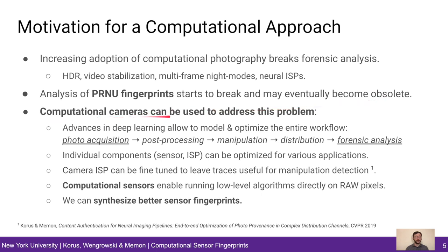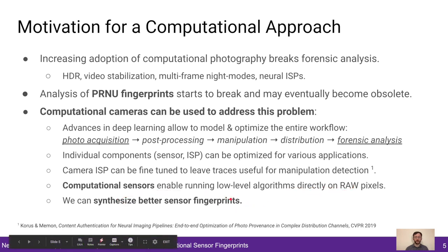However, we believe that computational cameras can actually be used to address this problem. Advances in deep learning allow us to model the entire workflow, starting from photo acquisition through distribution up to forensic analysis. Individual components, like the sensor or the ISP, can be optimized for various applications. For example, the camera ISP can be fine-tuned to leave traces that are useful for manipulation detection. Computational sensors enable running low-level algorithms directly at the raw pixel level, which allows us to synthesize better sensor fingerprints.